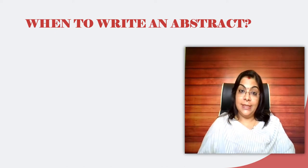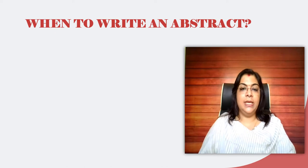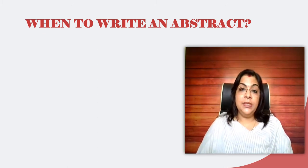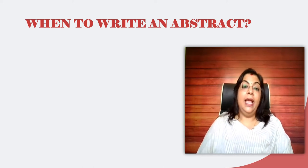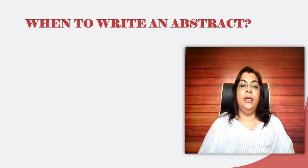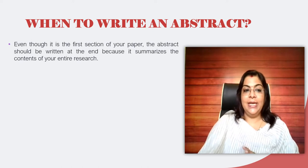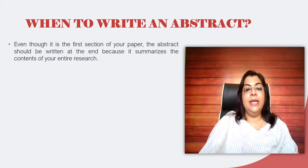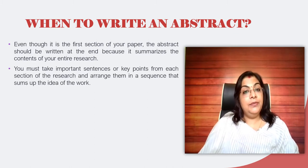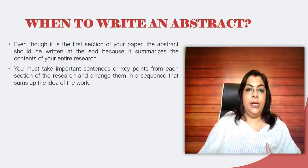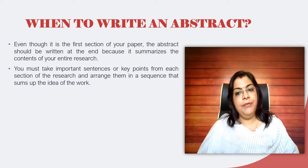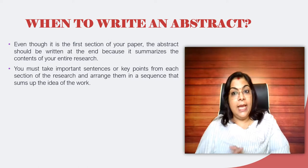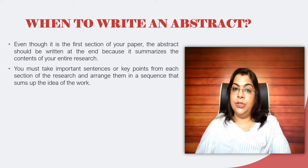No matter that many conferences or research papers require you to first submit an abstract and thereafter submit the full paper, it is suggested that you write the research paper or article first, and then write the abstract, so that it covers all the important things mentioned in your research paper. Even though the abstract is the first section of your paper, it should be written at the end because it summarizes the contents of your entire research. Thereafter, take the most important sentences or key points from every section, arrange them in sequence, and sum up your idea.